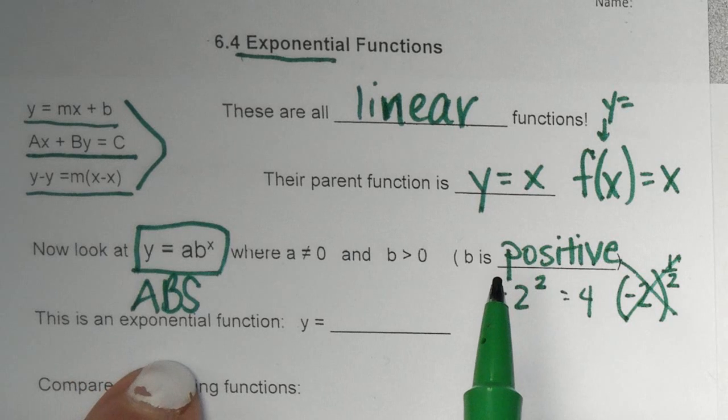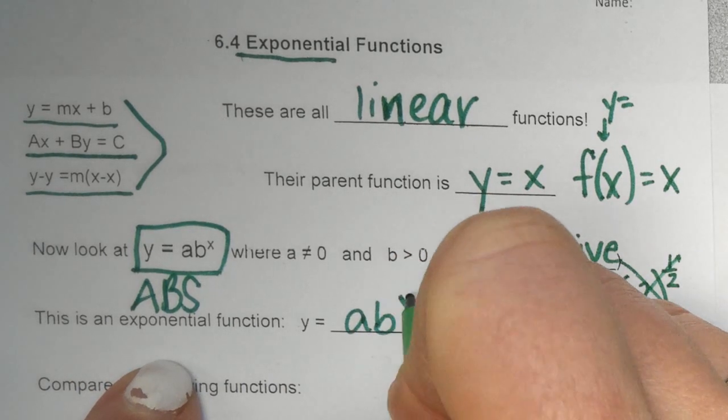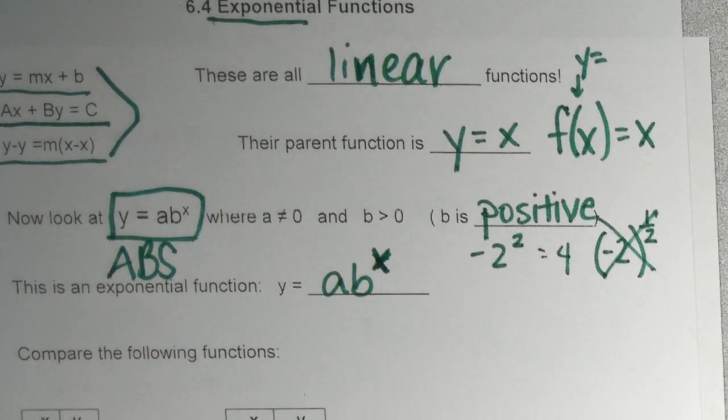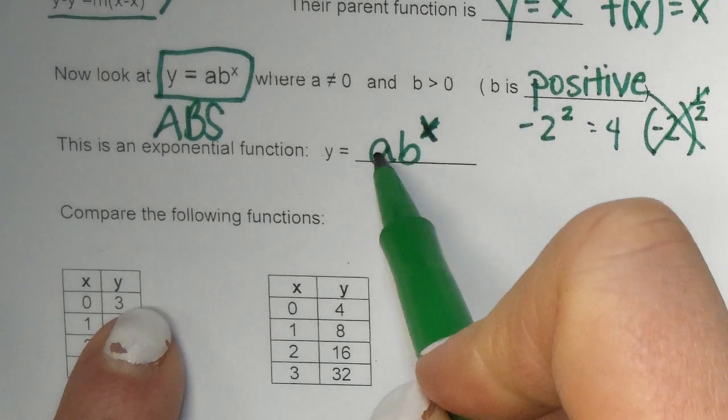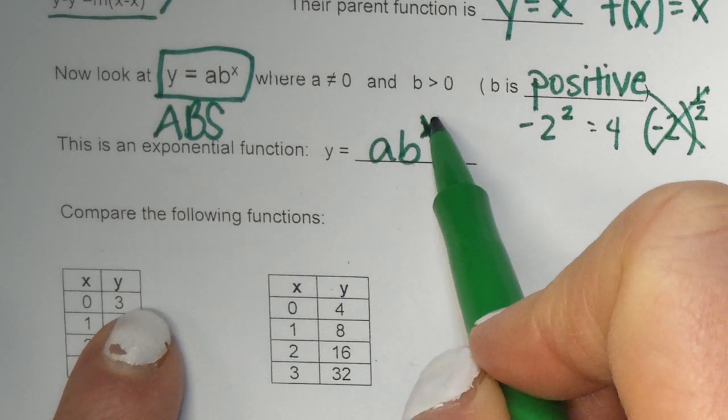This is an exponential function. That's what this is called. Y equals a, b to the x power. We're just going to write, you're going to see this a lot today in this pattern. A, which is any number, times b, which is the base, to an exponent.